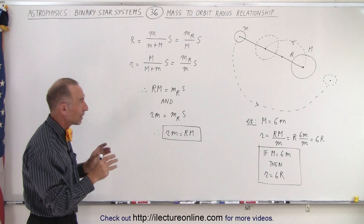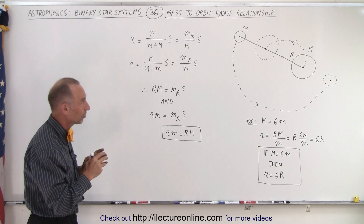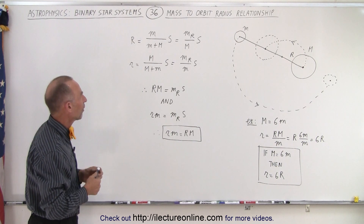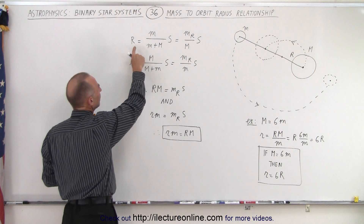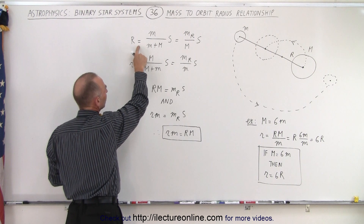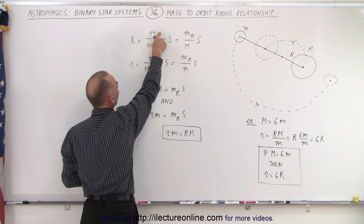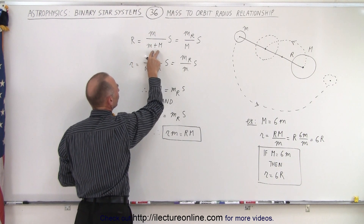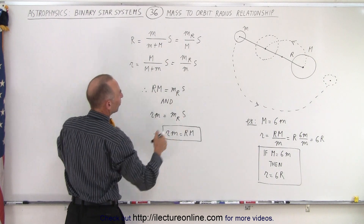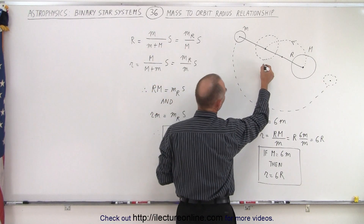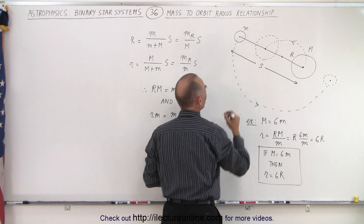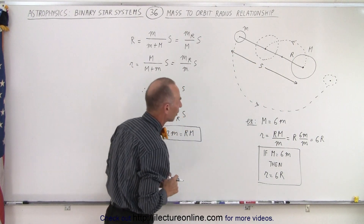What is the relationship between the radii of those orbits and their masses? The radius of the large object is equal to the ratio of the mass of the small object divided by the total mass, times the total distance s between the two objects. Here s is the distance from the center of mass of the small object to the center of mass of the large object.